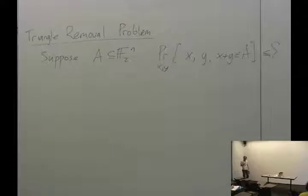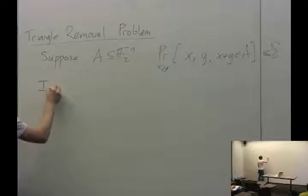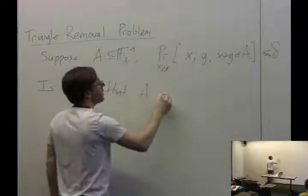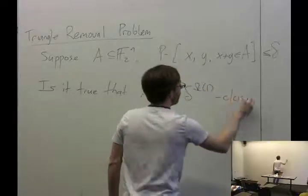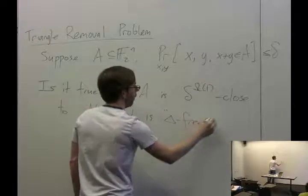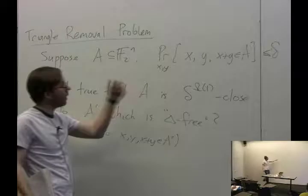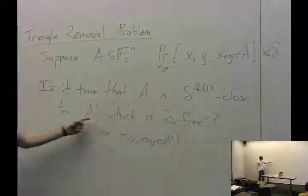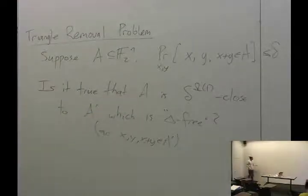Suppose you do that and find the probability is very small — something you could estimate with a small number of queries in the property testing setting. The natural hope, much like linearity testing, is that this means A must be close to a triangle-free set. So you ask: is it true that A is delta to the omega of 1 close to an A prime which is triangle-free — meaning there's no X, Y, and X plus Y all in A prime? When I say close, I mean you have to change A on that fraction of elements of F2 to the N to get to A prime. Since your goal is to make A prime triangle-free, you should just delete elements. So you ask: can you delete polynomial in delta times 2 to the N elements from A to make it completely triangle-free?